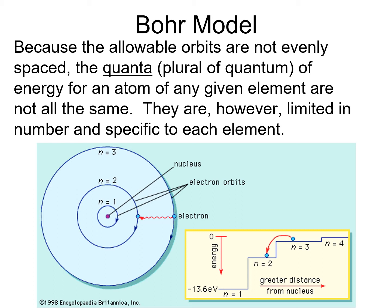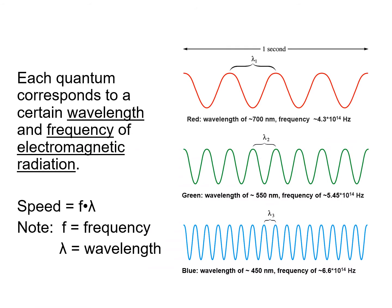Now, the allowed orbits for a given atom are limited in number and specific to that particular element. It has to do with, among other things, how much charge the nucleus has and how close it can pull the electrons.